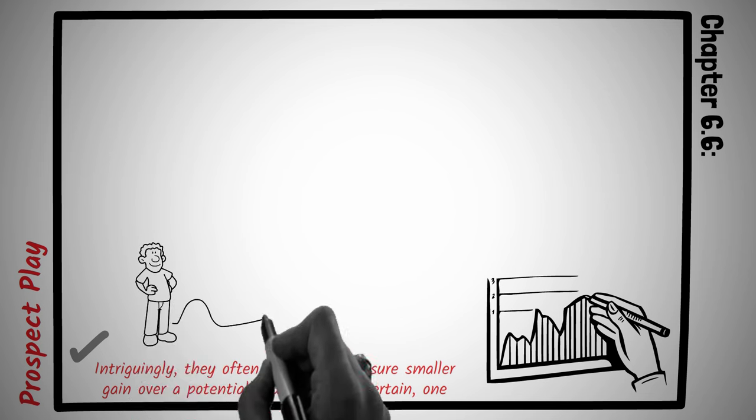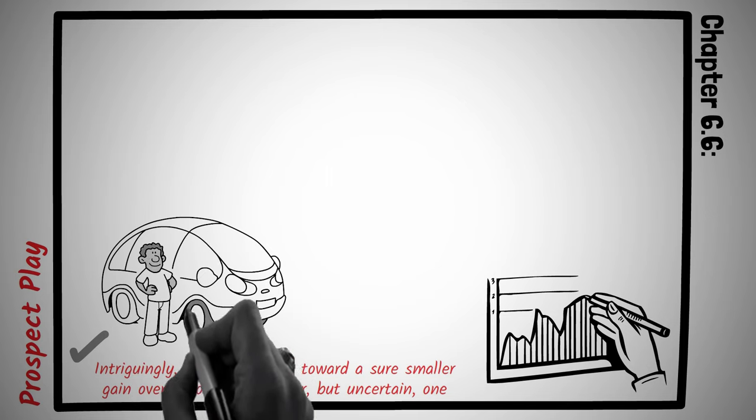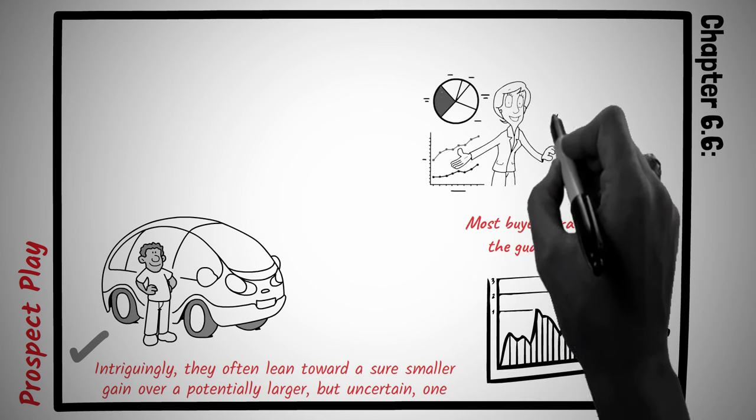Robert, a car salesman, presents two financing options to a buyer. The first guarantees a modest discount with standard financing rates, while the second offers a chance at a significantly larger discount but depends on a game of chance. Despite the allure of a potentially bigger savings, most buyers gravitate toward the guaranteed discount, a testament to the pull of certainty over uncertainty.